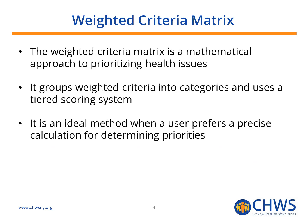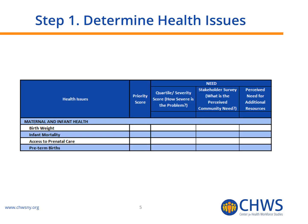The weighted criteria matrix uses a mathematical method by assigning values and weights to both the criteria used for scoring and the scores themselves. There are five steps to this approach. The first step is to identify the health issues within your community that you would like to address or improve.